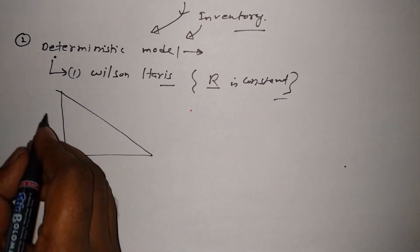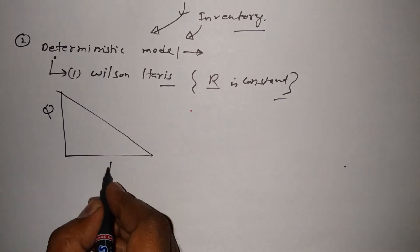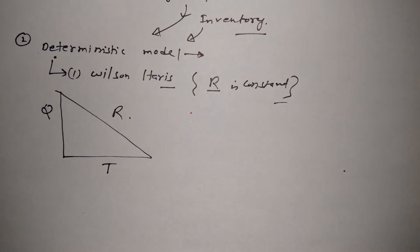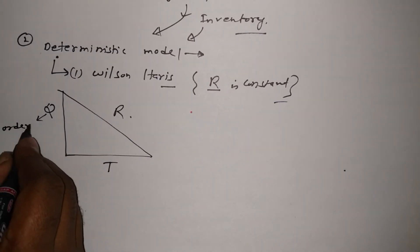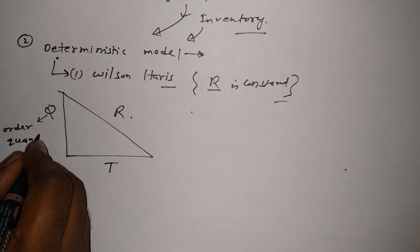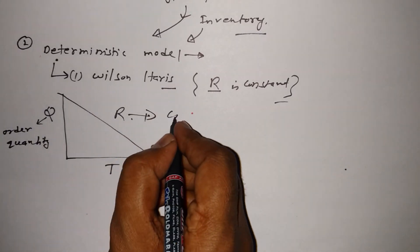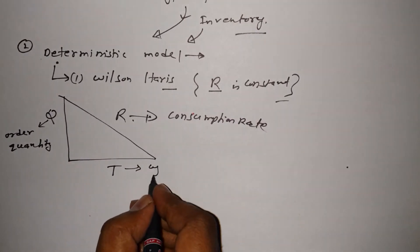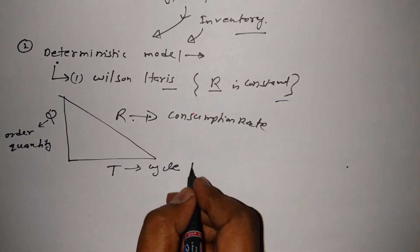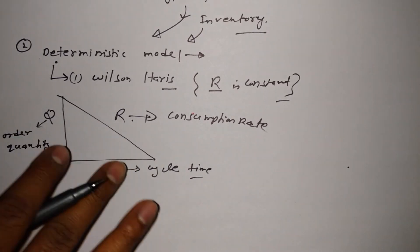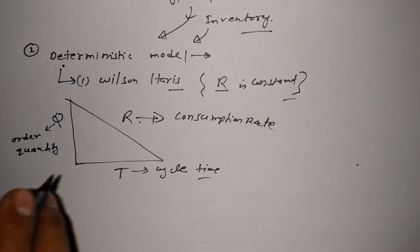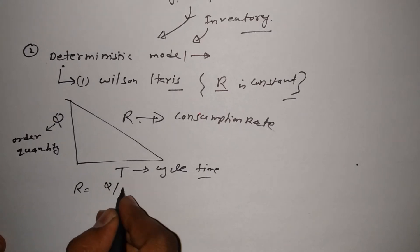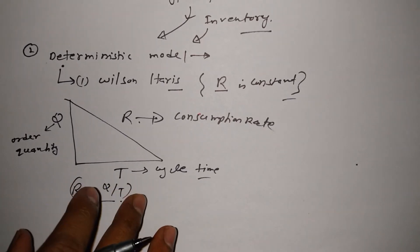Let me share with you a simple graph. In this graph I'm going to cover three main important components: Q, which is known as order quantity; R, which is the consumption rate; and T, which is cycle time. The relation among these three is: R = Q / T.